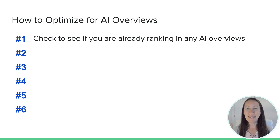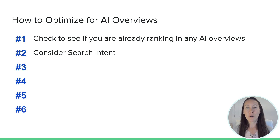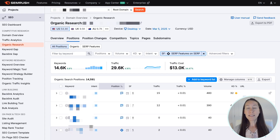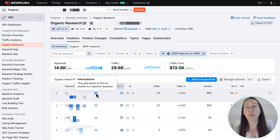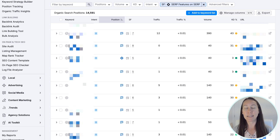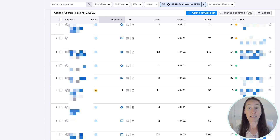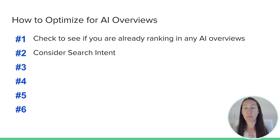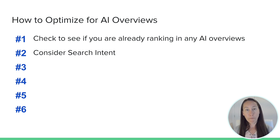The second thing you'll want to do is consider search intent. AI overviews are all about giving the searcher exactly what they are looking for — a really clear and concise answer. Be aware of the searcher's intent for a particular keyword. SEMrush will even tell you the search intent, and you can look at the search results to see what content is ranking well before you create content around that keyword.